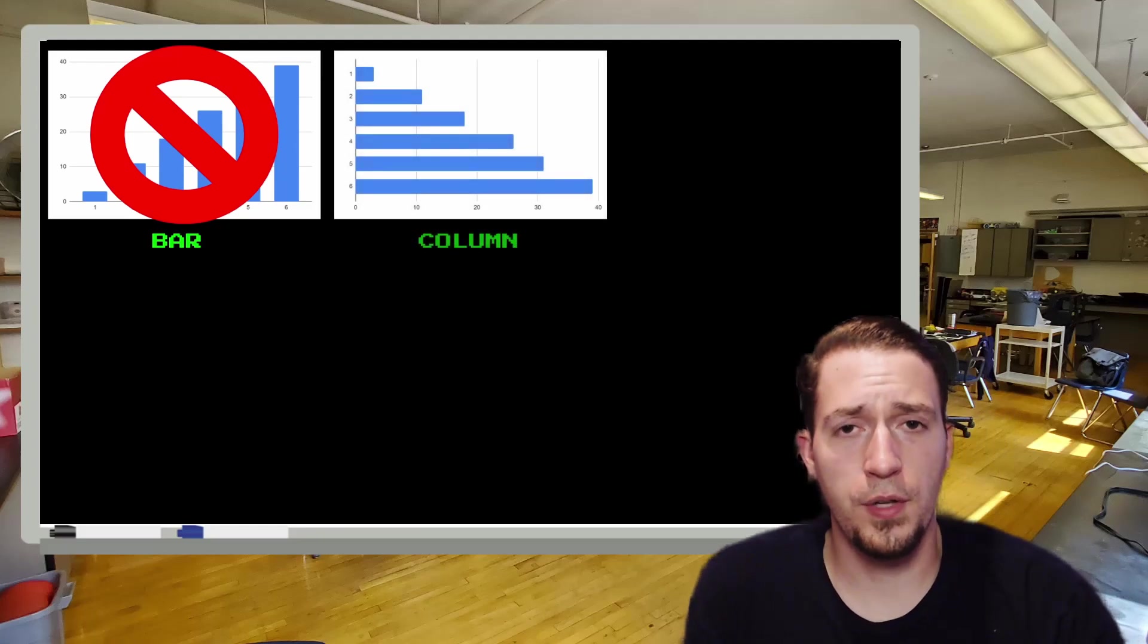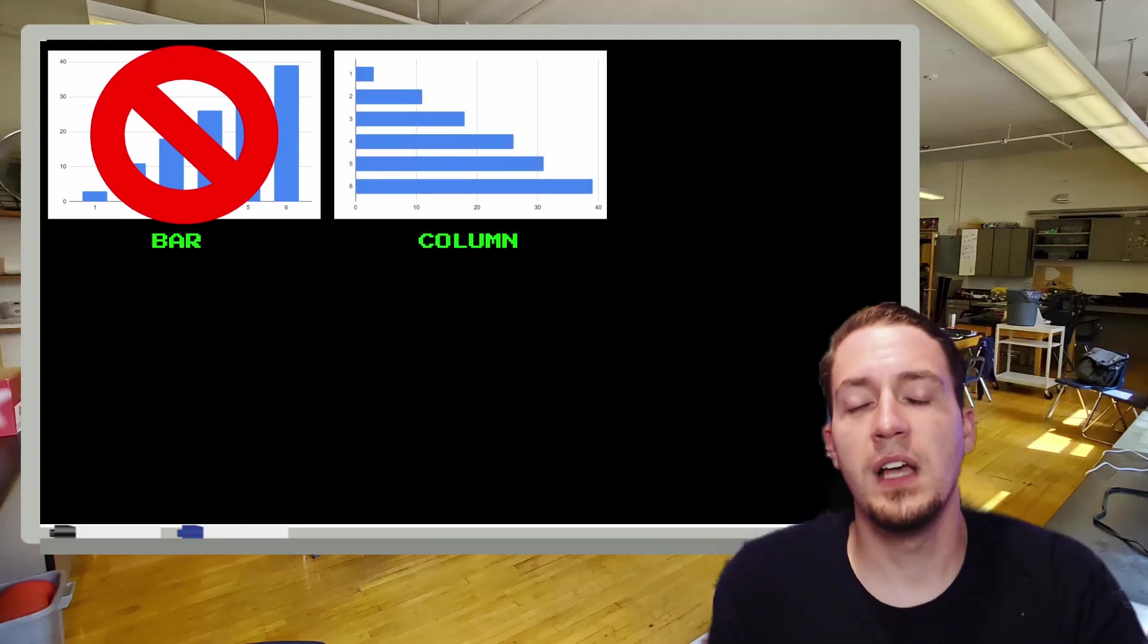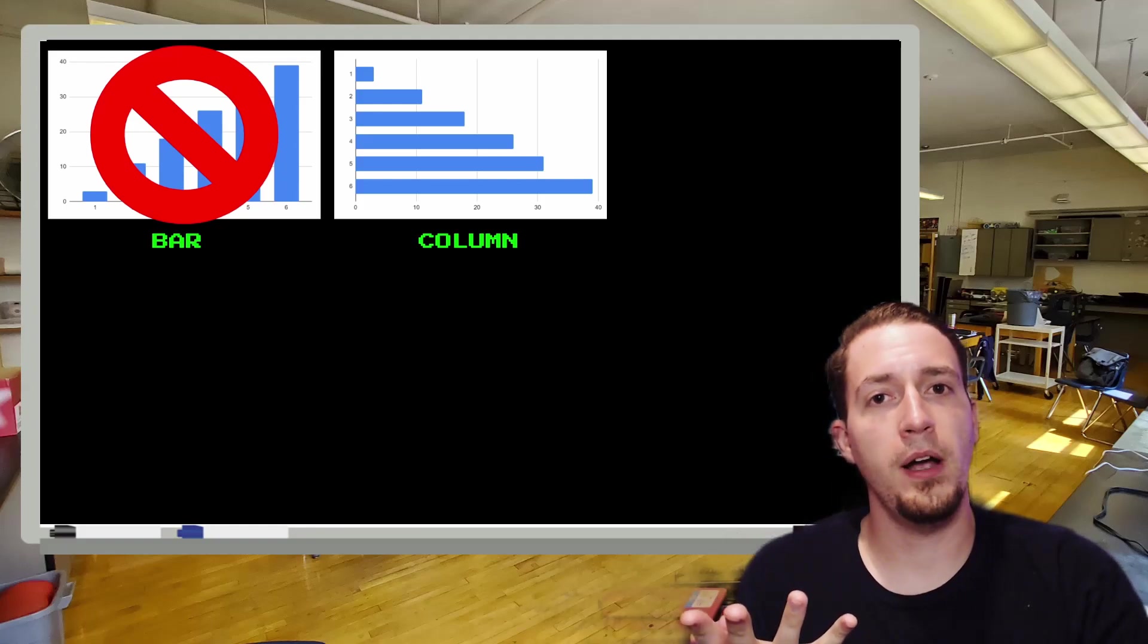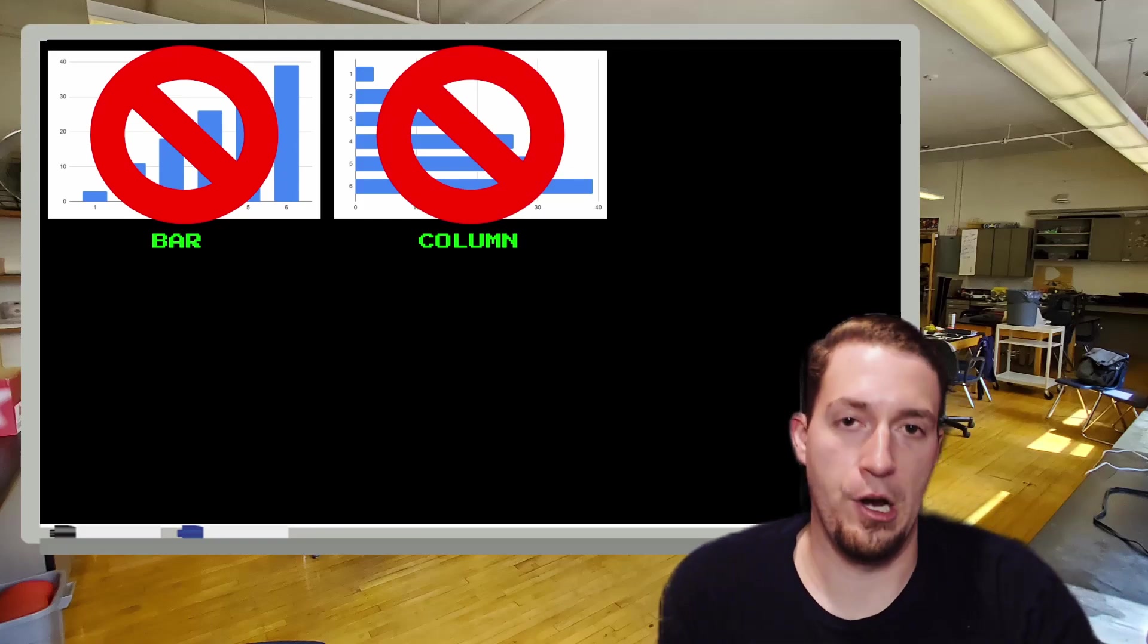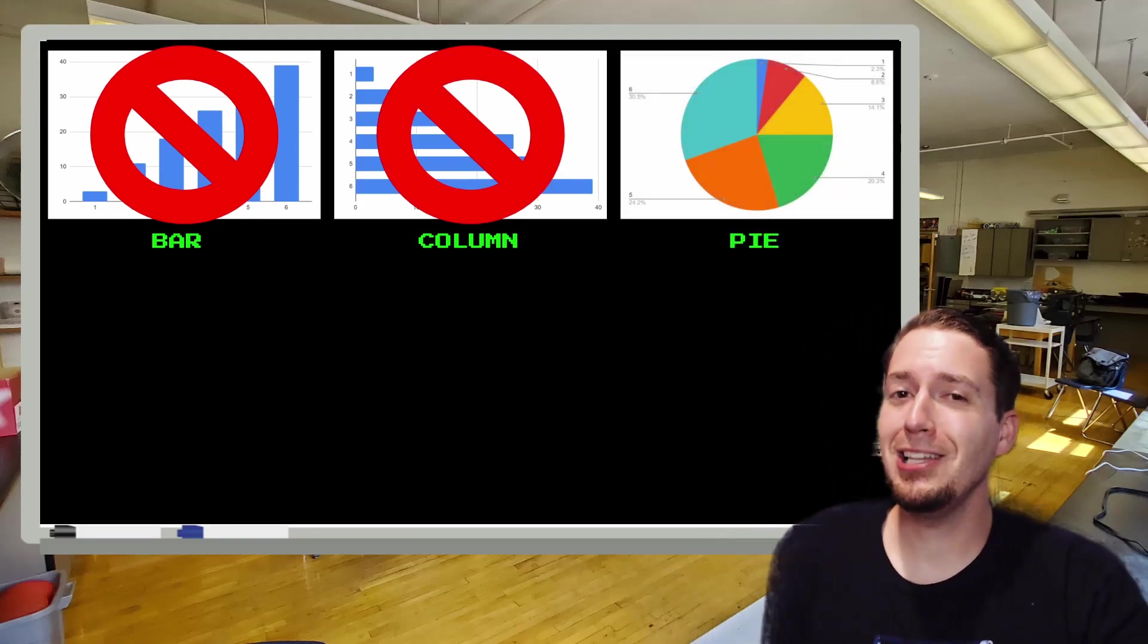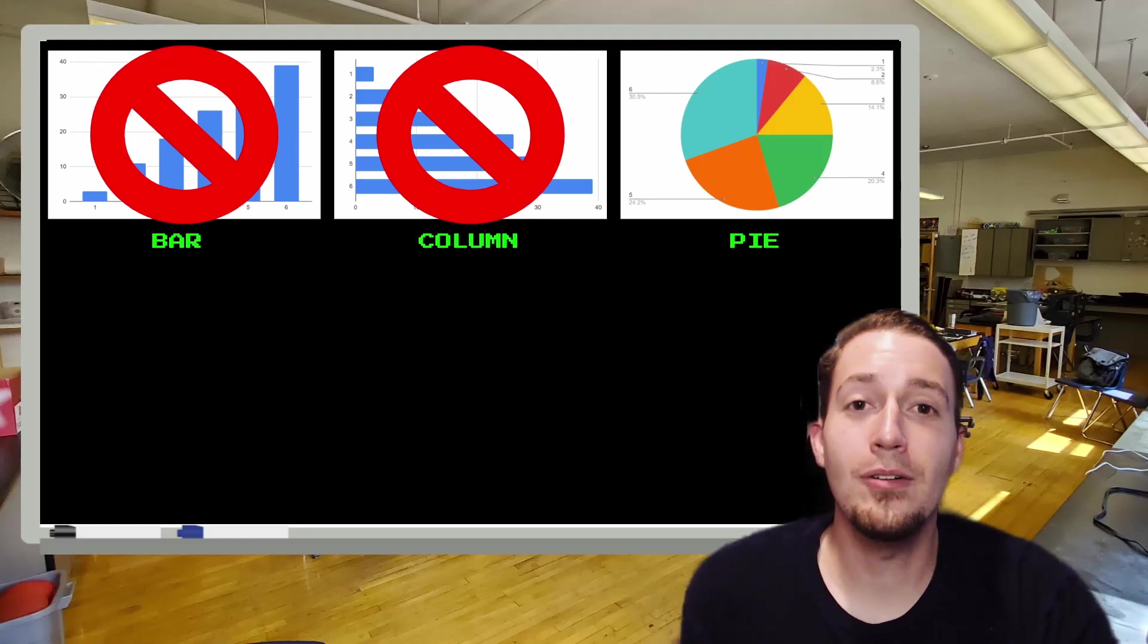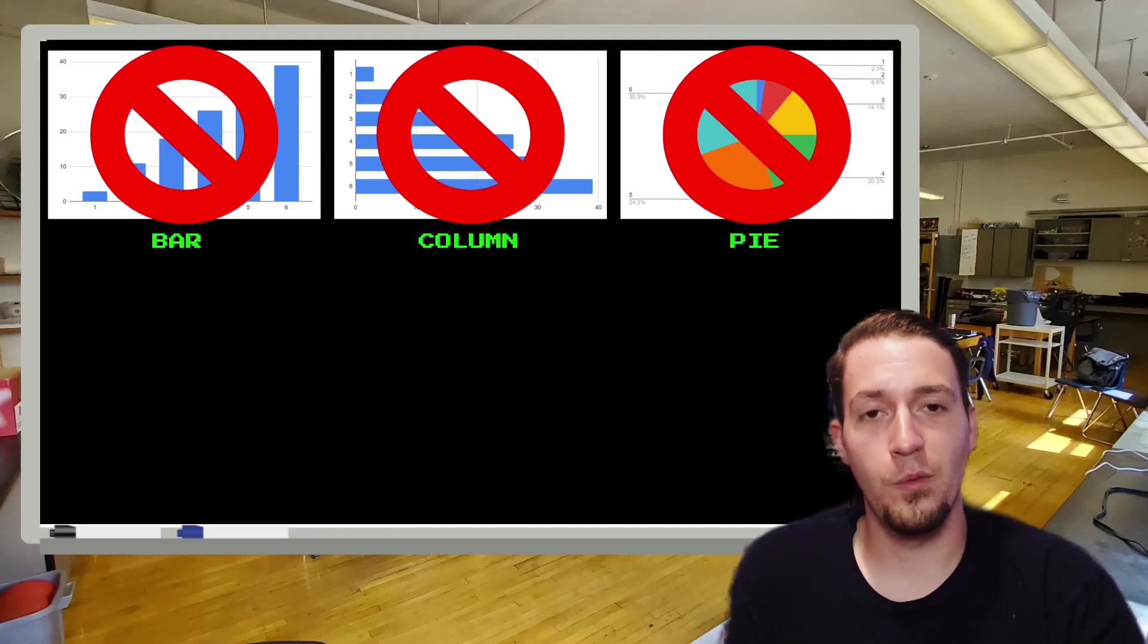Another graph we have is actually called a column graph. And if you just take your face and go like this, that's the same as a bar graph. So that's going to be a big N-O from me there. Our next graph, although it might look delicious, and we all know we want that teal slice, this is not the graph that we would be using.